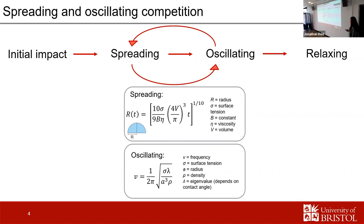For the oscillations, we have an equation dependent on surface tension, and we also have an eigenvalue term which takes into account the contact angle of the sessile droplet on the surface.